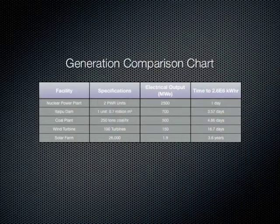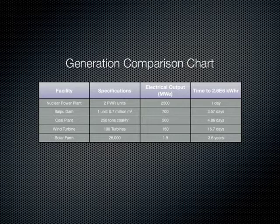As a direct comparison, this chart shows the time necessary for a representative example of each of the aforementioned power sources to match the production of a 2,500 megawatt nuclear power plant. Please note the rate of coal consumption inherent in this power level, and consider the fact that a single train car carries around 100 tons of coal.